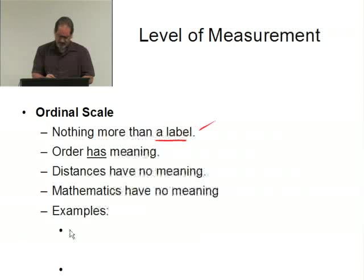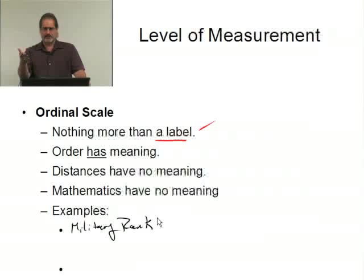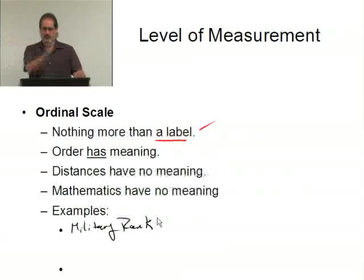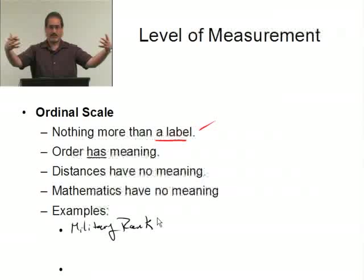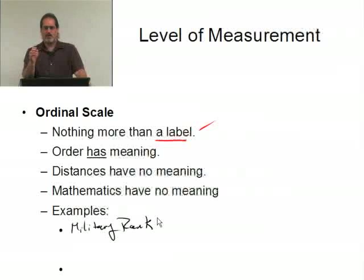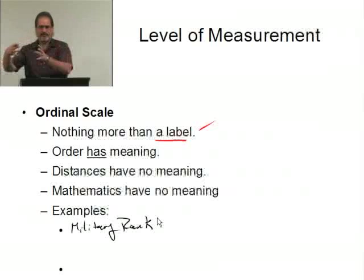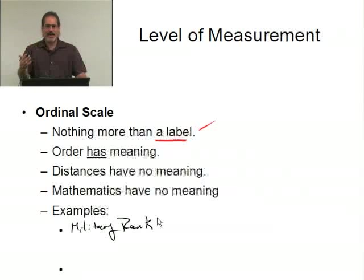A couple of examples. Military rank — there's an obvious order to military rank. For enlisted personnel: private, private first class, lance corporal, corporal, sergeant, staff sergeant, gunnery sergeant, master sergeant, sergeant major. There's an obvious ranking there. But I can't take a gunnery sergeant, subtract a corporal, and get something meaningful. There's definitely an order, but the concept of mathematics has no meaning with the actual data values. I can calculate what percentage are privates or staff sergeants, but that's not the same as subtracting the data values themselves.